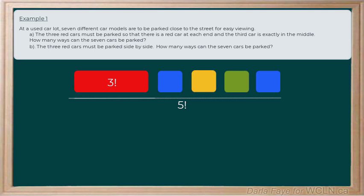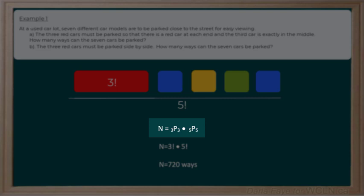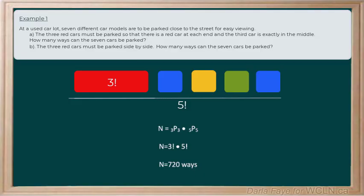Ultimately, that means we've got three pick three and five pick five. And we know that just means that we're going to do three factorial multiplied by five factorial, which gives us 720 possible lineups that can be created at the front of the parking lot.